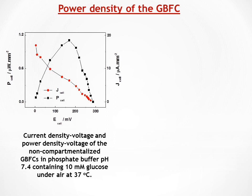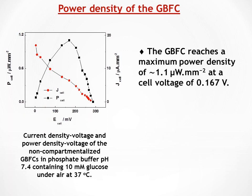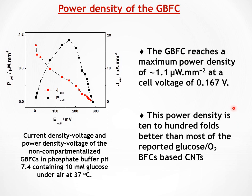This figure illustrates the variation of the power output versus cell voltage of the constructed biofuel cell in a phosphate buffer solution containing 10 mM glucose under air at 37 degrees. One can clearly see that we have a maximum power density of about 1.1 mW per cm². It is worth noting that this power density is significantly better than most of the reported glucose O2 biofuel cells based on carbon nanotubes.